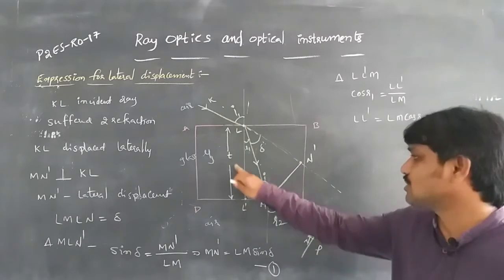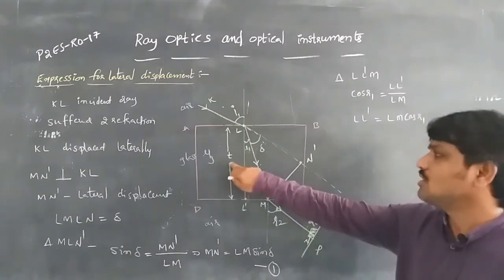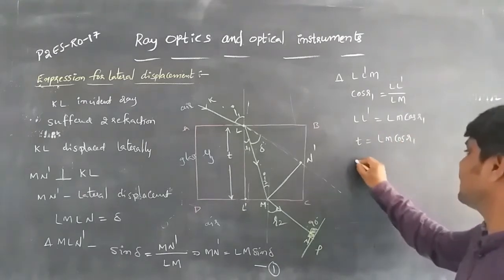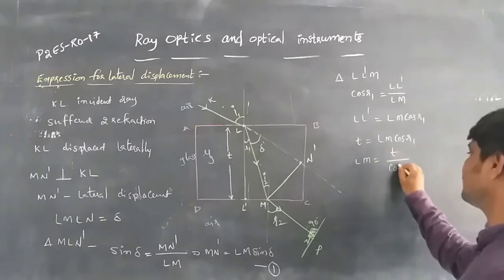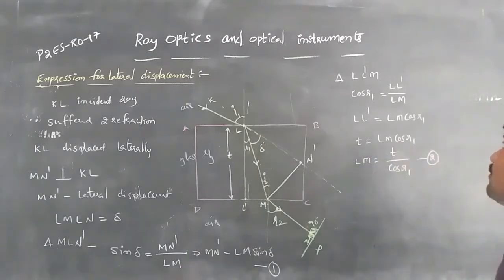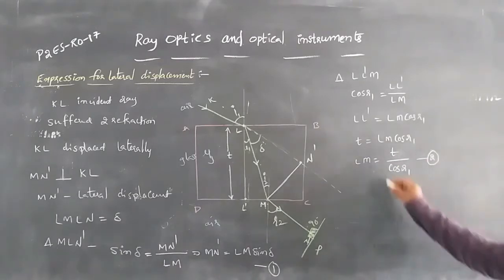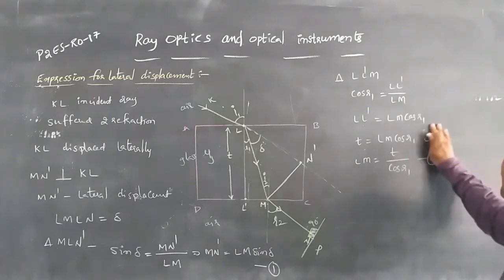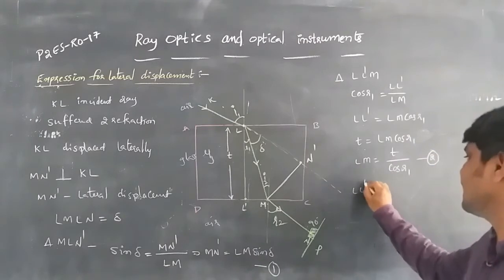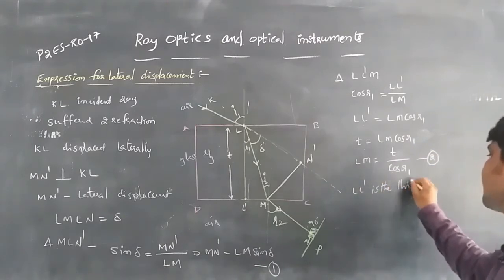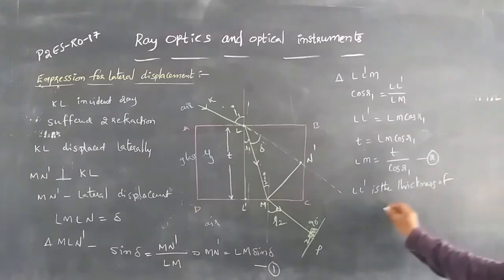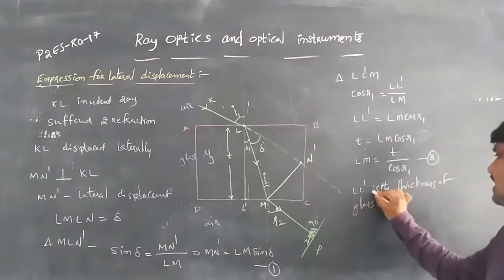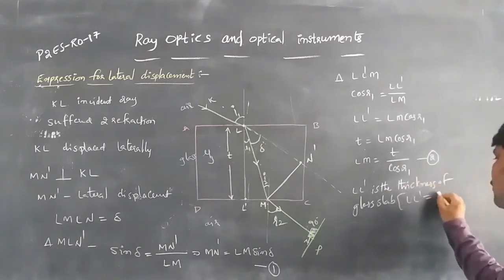We know that LL dash equals T, the thickness of the glass slab. Since T equals LM·cosR1, we get LM equals T divided by cosR1. This is equation number 2. LL dash is the thickness of the glass slab, so LL dash equals T.